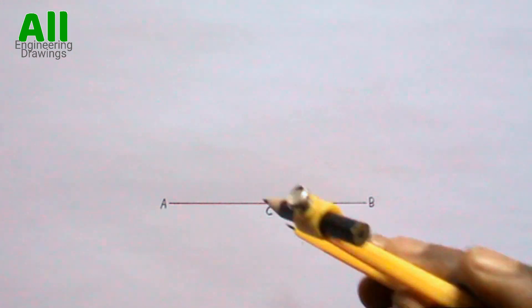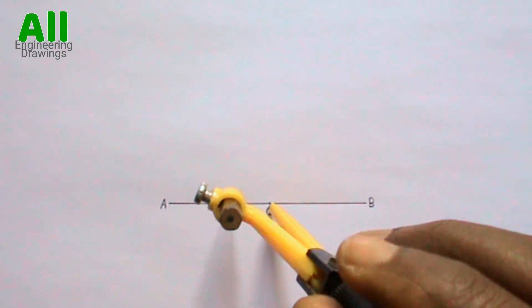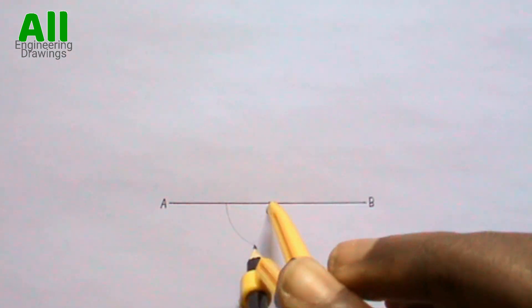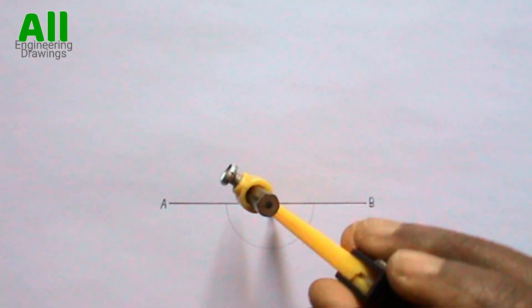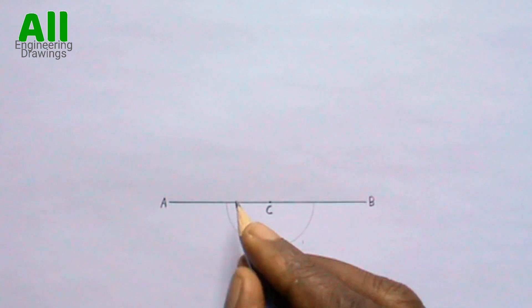Now, place your compass at point C, then draw a semicircle below the line. The semicircle can be of any convenient radius. Label the points where the semicircle intersects the line.